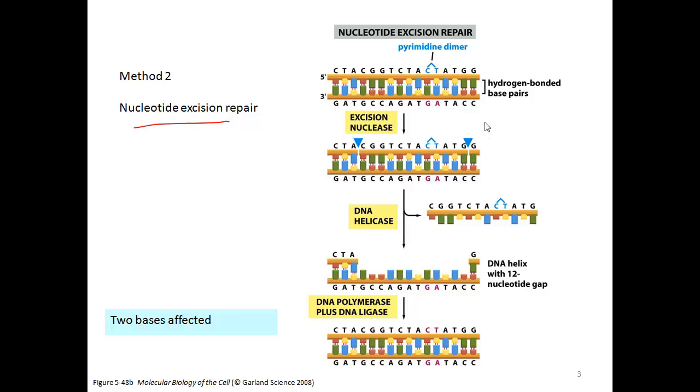A second type of DNA repair method is called nucleotide excision repair. In this case, two or more bases can be affected. The type of damage shown here is a pyrimidine dimer, a more generic term for thymine dimers. Here we have a CT base pair that forms a dimer.